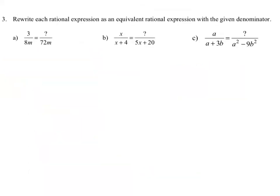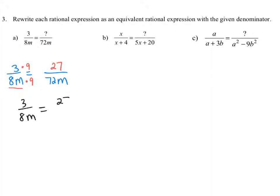For these examples, we're going to rewrite each rational expression as an equivalent rational expression with the given denominator. We begin with 3 divided by 8m, and we want to write it with a denominator of 72m. The original denominator 8m was multiplied by 9 to give 72m. So we also multiply the numerator by 9: 3 times 9 is 27. The rational expression 3 over 8m is the same as 27 over 72m, so 27 is the missing numerator.